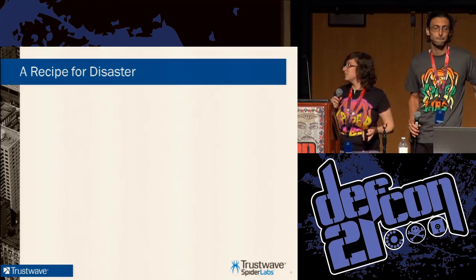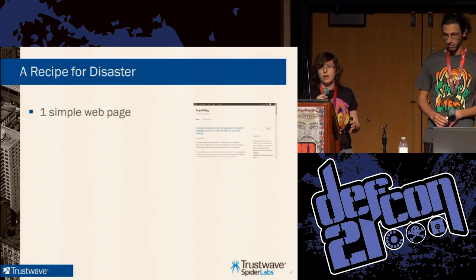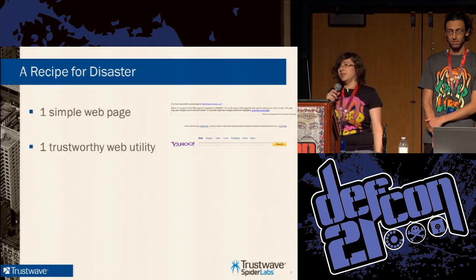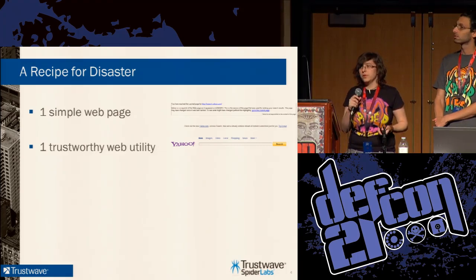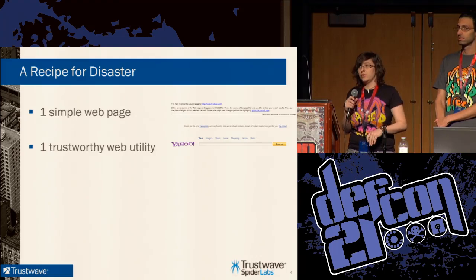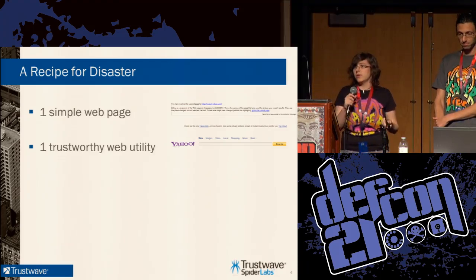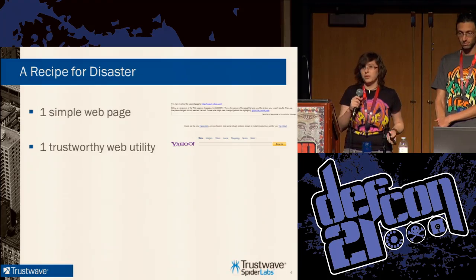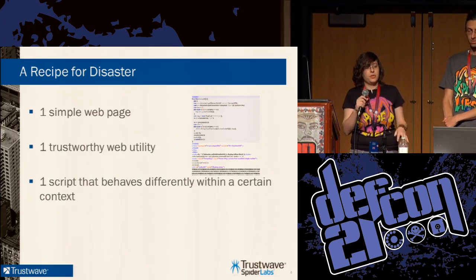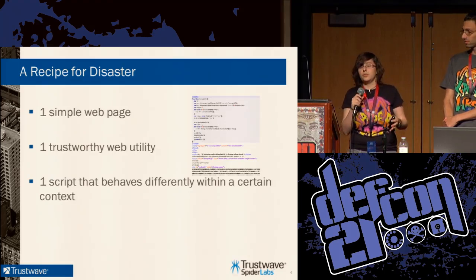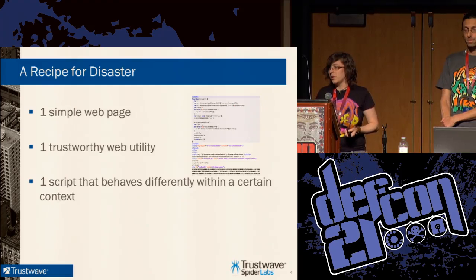Now we're going to look at what we need in order to execute such an attack. The first thing we need is one simple web page — really any web page will do. We chose to use a WordPress blog to not look too suspicious and drown in Internet traffic. Next we're going to need a trustworthy web utility — some sort of website that people are pretty familiar with and sort of trust — and it needs to have some sort of service that will take content provided by the user, manipulate it, and in some way return it to users. For example, we're going to use the Yahoo cache service. And the last thing we need is a JavaScript code that behaves differently within a certain context — this will be the core of the concept of RDI.